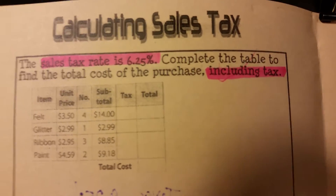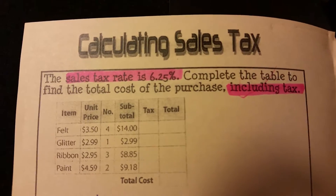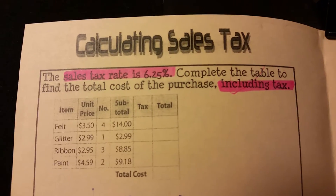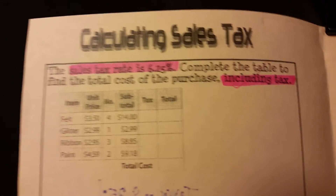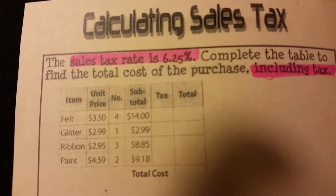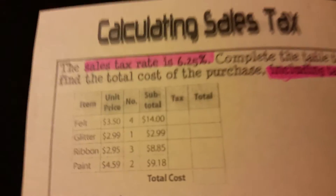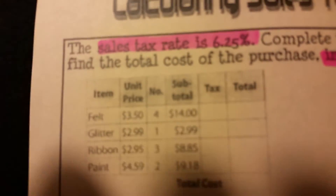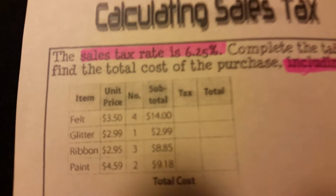Here we have a table with the items, how much it is for one, the number of items we're going to buy, and a subtotal. We don't have to find the subtotal — it's already given to us. Normally we would take the items and multiply by the number to get that subtotal, but that's already done for us.